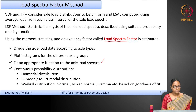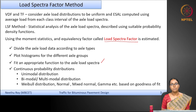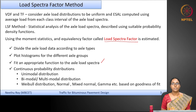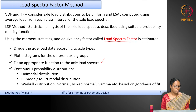Sometimes unimodal distributions may work, and sometimes you may go for bimodal or multimodal distributions. Weibull distribution, normal distribution, mixed normal distribution, gamma distribution, etc., are some of the distributions commonly used to fit this axle load histogram.